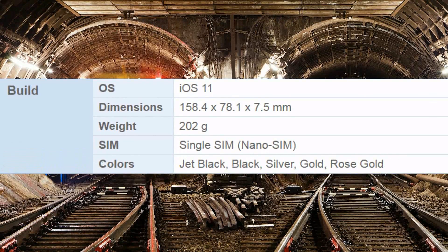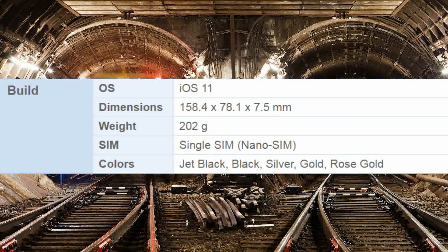Build OS: iOS 11. Dimensions: 158.4 by 78.1 by 7.5 millimeters. Weight: 202 grams. Single SIM, nano SIM. Colors: jet black, black, silver, gold, rose gold.